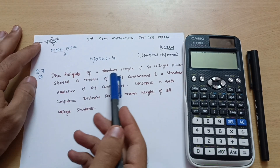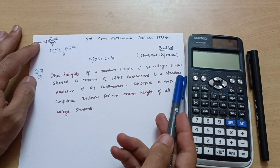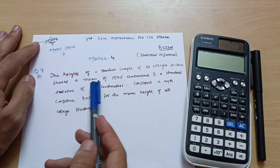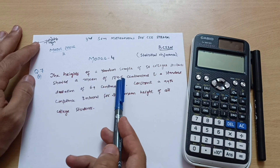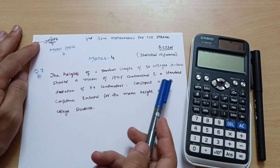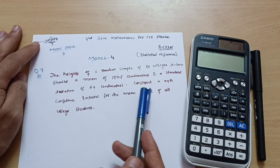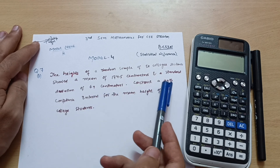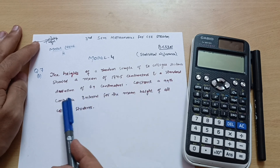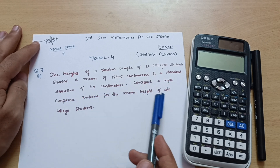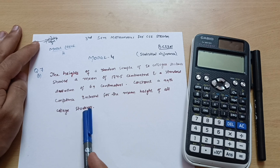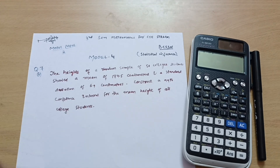The heights of a random sample of 50 college students showed a mean of 174.5 centimeters and a standard deviation of 6.9 centimeters. Construct a 99% confidence interval for the mean height of all college students. This module is very simple — just remember the formula and put in the values.